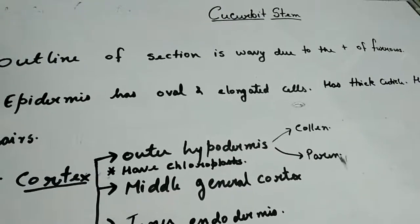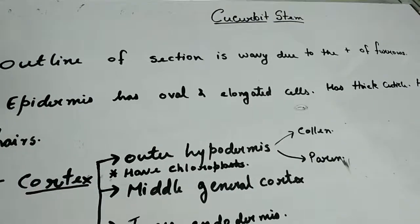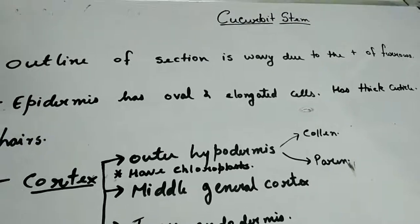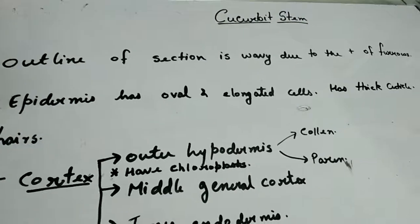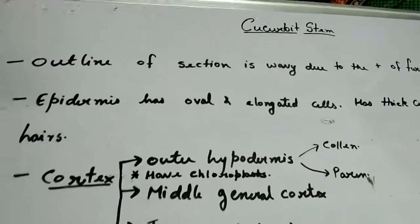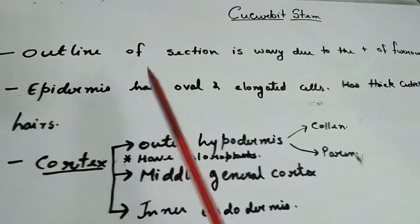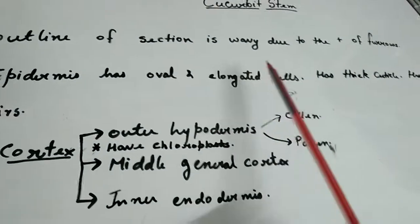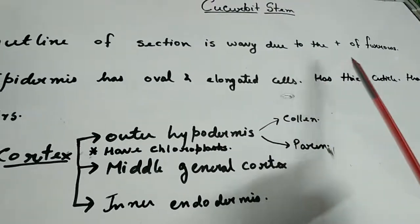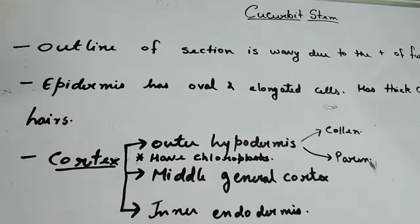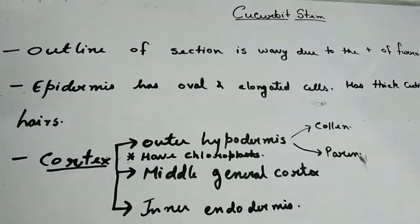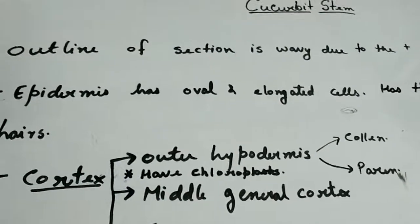The outline of the section is very wavy due to the presence of furrows and ridges. If you get a specimen of cucurbita stem and are asked to keep that specimen under microscope, you can actually identify the wavy lines.